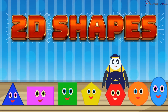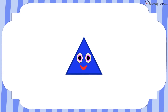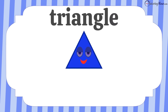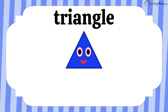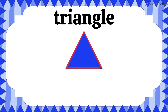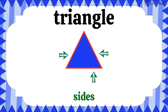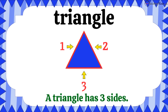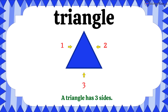Let's take a look at our first shape: the triangle. A triangle is a three-sided shape. These are the sides of the triangle. Let's count the sides: one, two, and three. The triangle does have three sides.